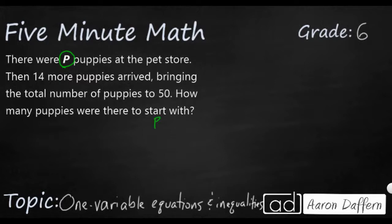Well, let's see if we can write a very simple equation. There were P puppies at the pet store, so I'm just going to start that at the beginning of my equation. Then 14 more puppies arrived. So we know our number is 14. Now let's think about what operation is going to join those two. 14 more puppies arrived. It seems like it's a very simple addition.